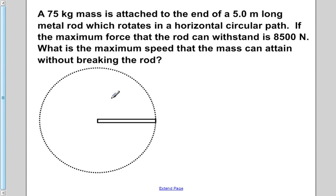It is a length of 5 meters as stated above. So the length of our rod is going to be the radius because at the end we have some mass attached to it, m, which is equal to 75 kilograms.